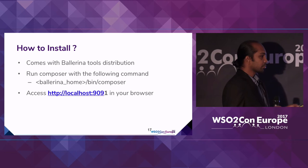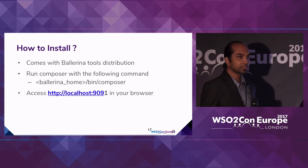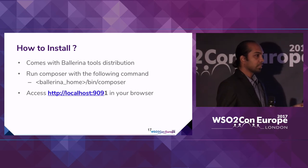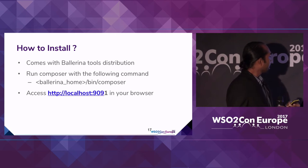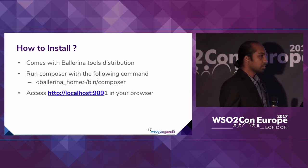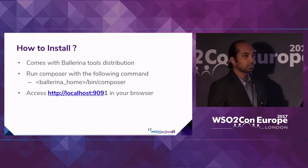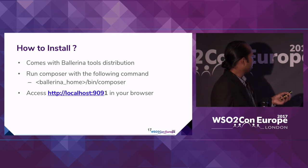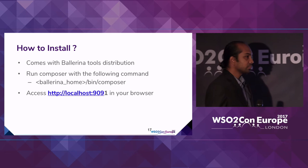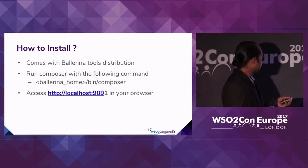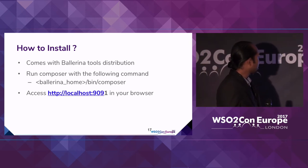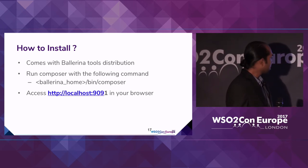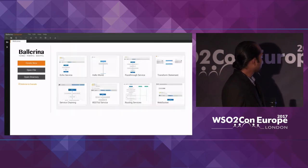How do you get it? Composer is shipped with the Ballerina tools distribution. If you go to the Ballerina site, there are two artifacts you can download: one is the Ballerina runtime, used in production environments to host your programs, and the other is the tools distribution with all the command line tools and Composer, targeted for developers. Once you run the Composer command inside the tools distribution, it will start a service on a default port, and then you can go into the browser and activate the Composer.